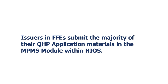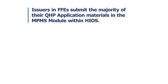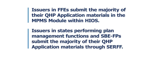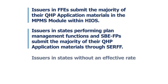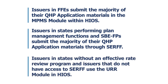All issuers seeking certification, regardless of state exchange model, require access to the MPMS module. Although issuers in states performing plan management functions and state-based exchanges on the federal platform, or SBEFPs, will continue to submit the majority of their QHP application data to their states through the System for Electronic Rates and Forms Filing, or SURF, before that data is transferred by their state to the MPMS module. Issuers in states without an effective rate review program and issuers that do not have access to SURF use the Unified Rate Review, or URR, module in HIOS as well.